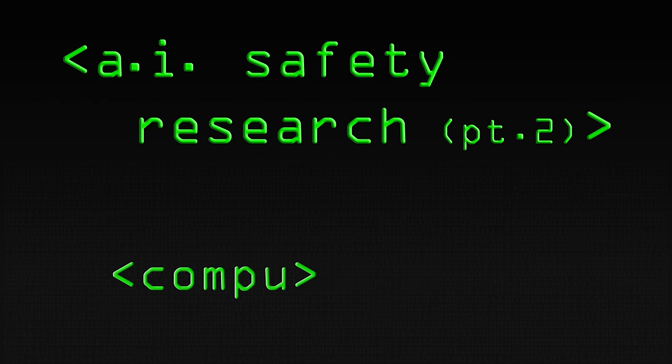In almost any situation, being given a new utility function is going to rate very low on your current utility function. So that's a problem. If you want to build something that you can teach — meaning you want to be able to change its utility function — you don't want it to fight you. This has been formalized as a property we want early AGI to have, called corrigibility: it's open to be corrected.